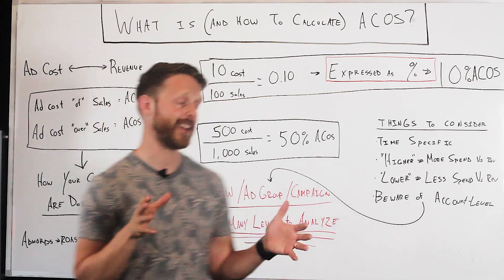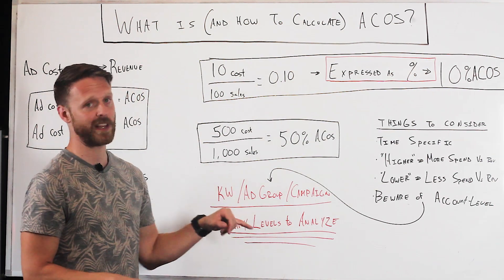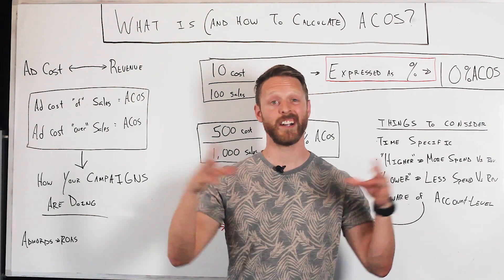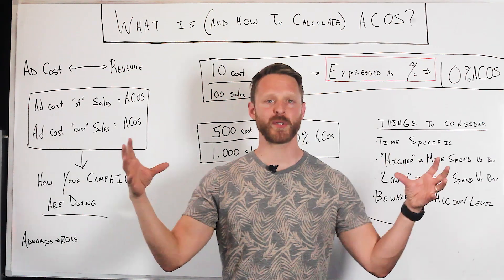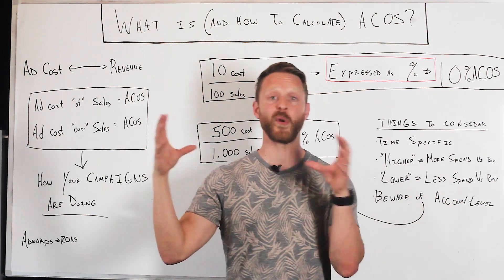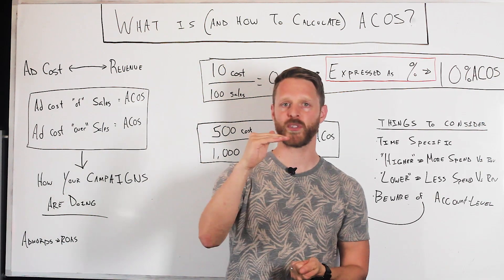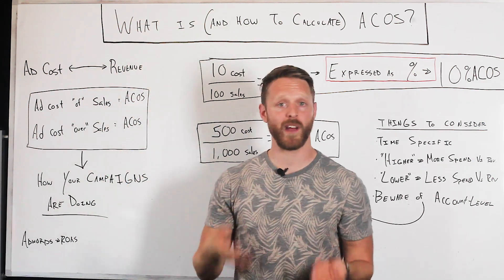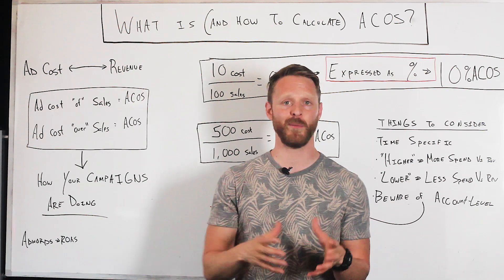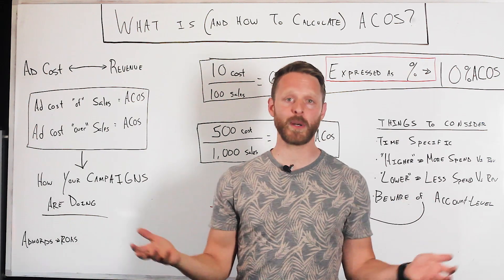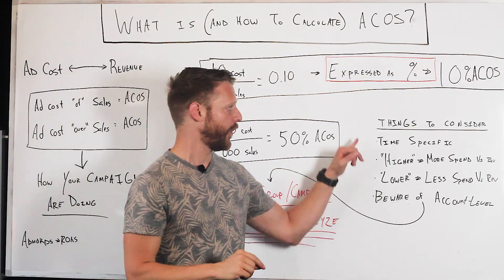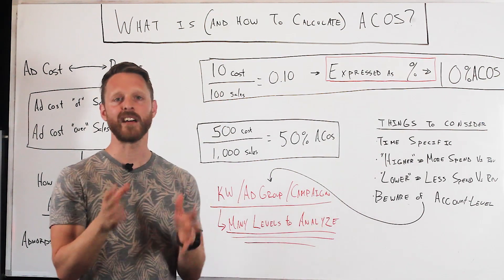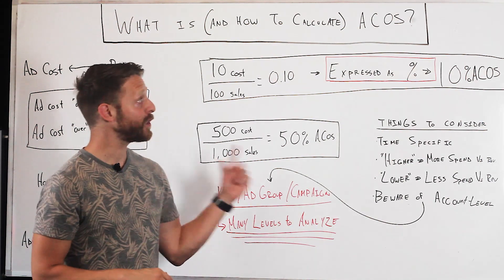The other thing to be cautious of is that ACoS differs depending on what dimension you're looking at — you could be at the keyword level, the ad group level, or the campaign level. It's very normal for a large account to have a lifetime ACoS of 30%, but last month it was 40%. Within that month, some campaigns might be at 10% ACoS and others at 60%. Inside those campaigns, some keywords might perform at 10–20% ACoS while others hit 80, 90, or even 120% ACoS. So it's really important to know both the time period and the level at which you're examining your data.